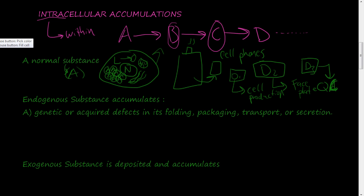Moving on to the next classification: the endogenous substance. An endogenous substance accumulation is almost exactly like the first classification - similar to that manufacturing company making cell phones - but there is a genetic or acquired defect involved.